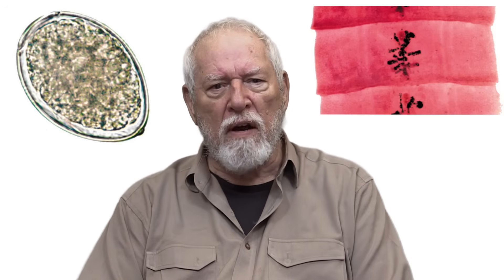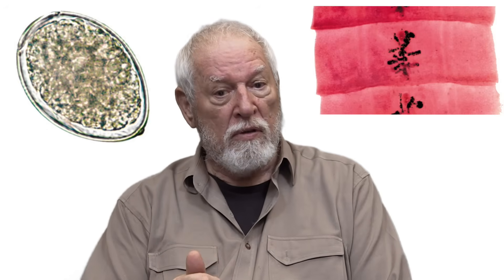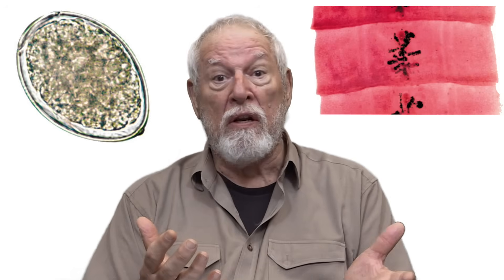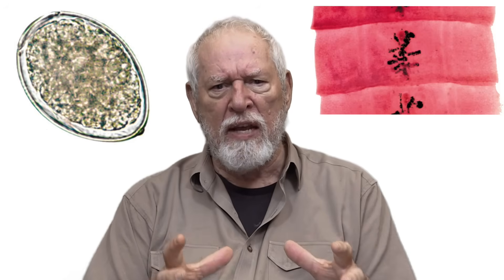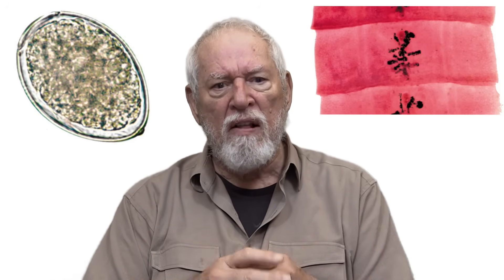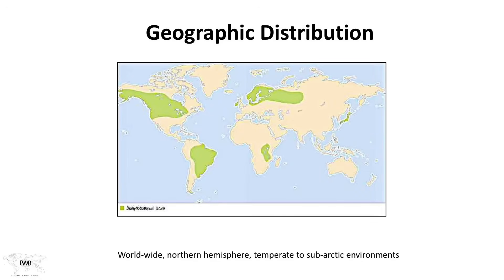Let's discover where Diphyllobothrium and its relatives are found. Because we can now examine their genomes, there are many different species of Diphyllobothrium, which all fall together within the same general scheme of things and affect a wide variety of mammals — all in the northern hemisphere and mostly in the subarctic and Arctic.